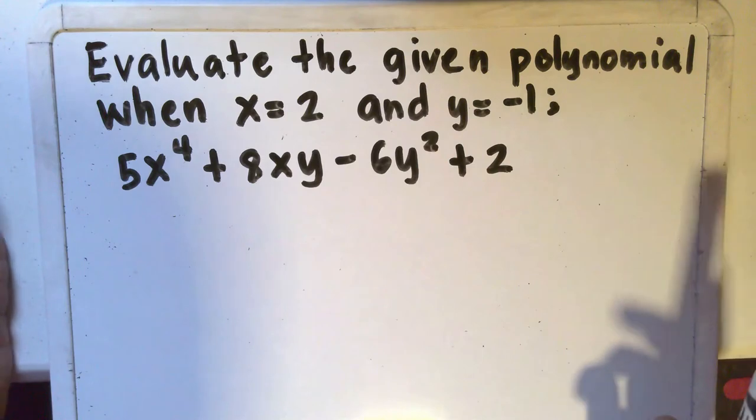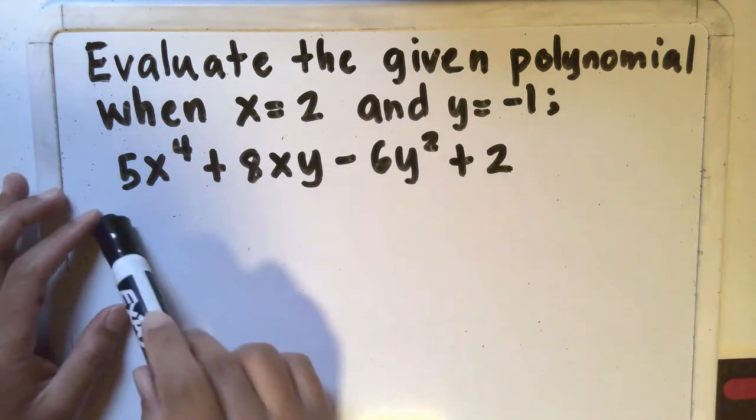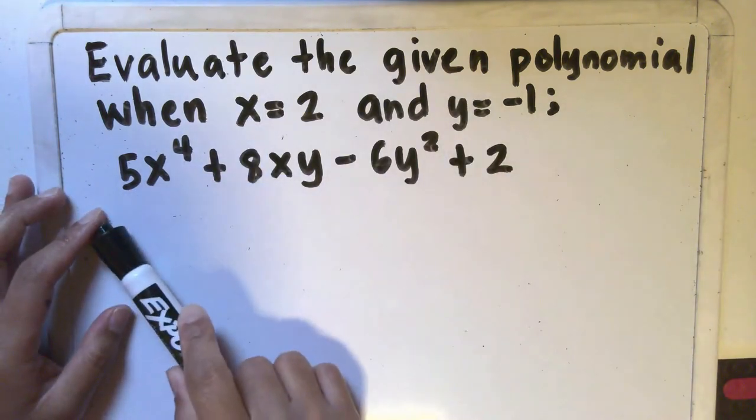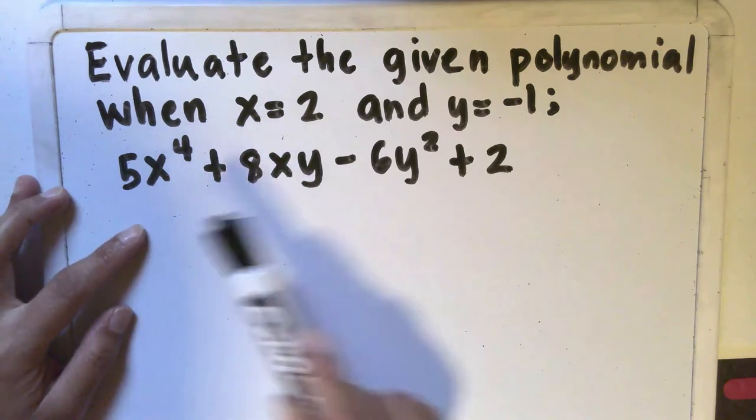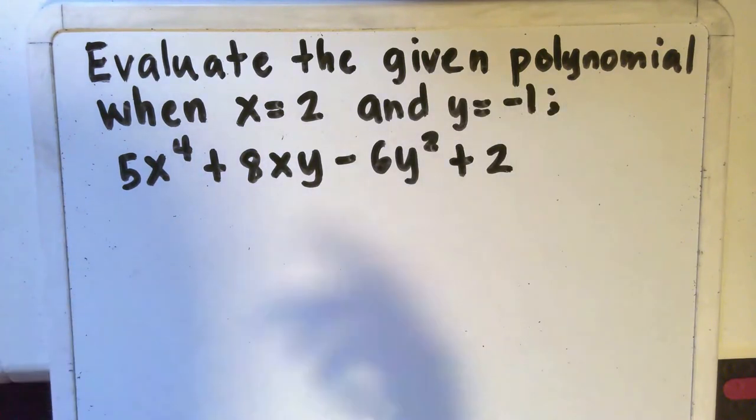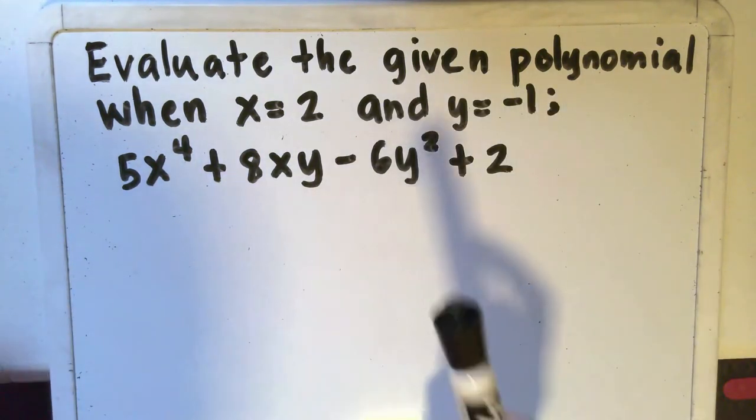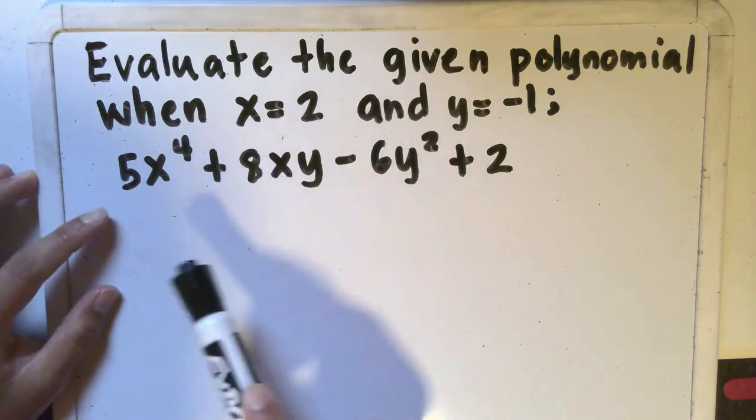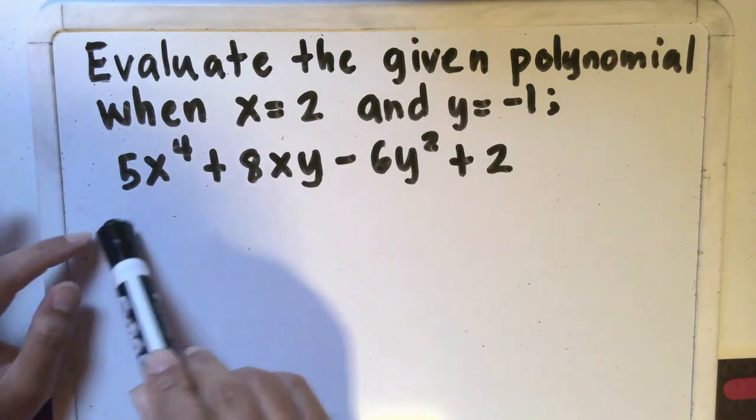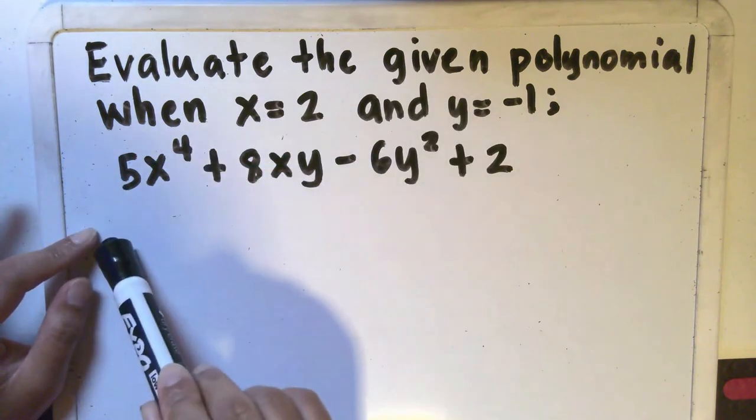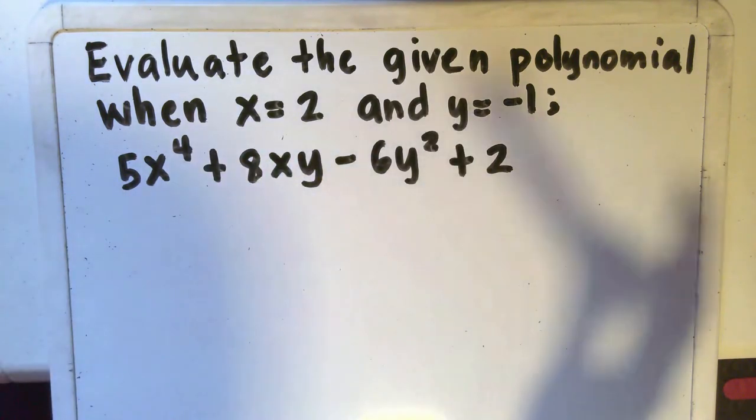What does it actually mean to evaluate? To evaluate means to find the value of the entire polynomial when x is equal to 2 and y is equal to negative 1. Simply put, we are going to substitute 2 for x and negative 1 for y and simplify this entire expression and find out what's the actual value.